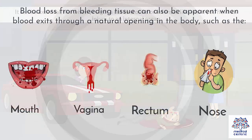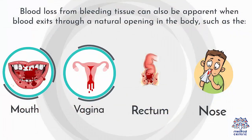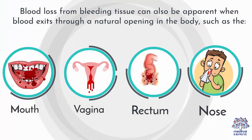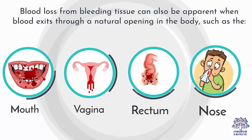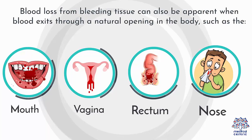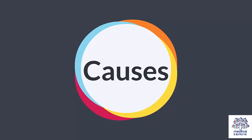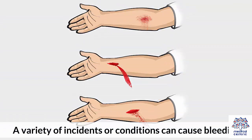Blood loss from bleeding tissue can also be apparent when blood exits through a natural opening in the body, such as the mouth, vagina, rectum, or nose. A variety of incidents or conditions can cause bleeding.